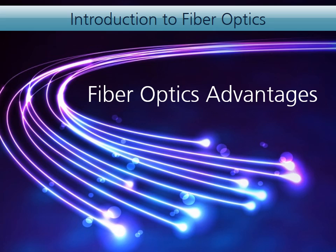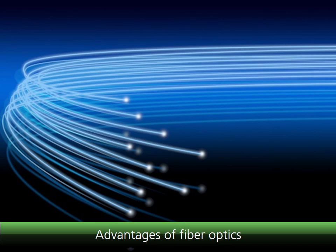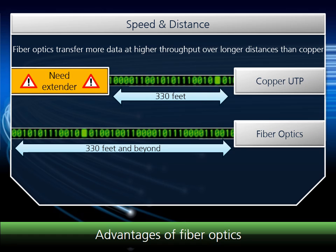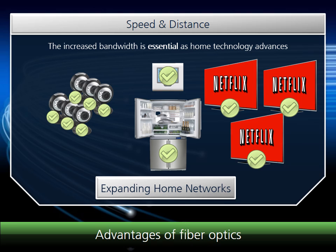Let's review the advantages of using fiber optics for both the consumer and the integrator. First and foremost, fiber doesn't lose the signal strength at higher frequencies like copper does. This is important for two reasons: speed and distance. Its higher frequency capability allows fiber to transfer more data in less time over longer distances than copper — this is fiber's greatest advantage. The increased bandwidth fiber provides is essential as home technology advances. Along with computers, digital tablets, and smartphones, other devices including webcams, home automation products, and smart TVs require a network connection to operate at full potential. Fiber can easily deliver the necessary bandwidth for the ever-expanding home network.